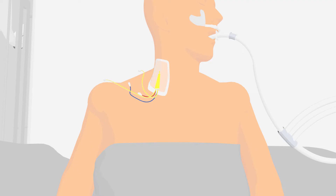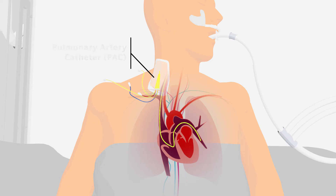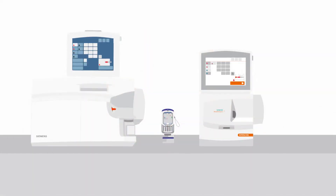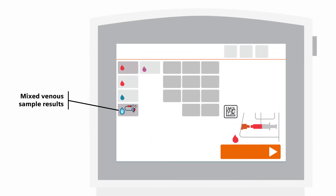When it comes to mixed venous sample analysis, blood is collected from an indwelling catheter in the pulmonary artery, typically referred to as a Swan-Ganz catheter. The blood obtained from the pulmonary artery catheter is used for the dynamic diagnostic evaluation and management of the critically ill patients. When mixed venous blood gases from the pulmonary artery are combined with arterial blood gas measurements, the results frequently clarify the cardiopulmonary status and assist in determining appropriate therapeutic procedures to be initiated.